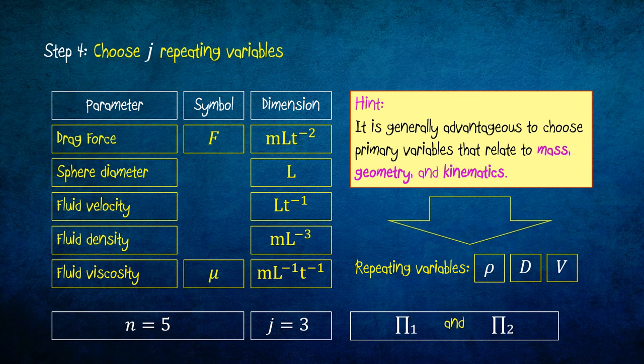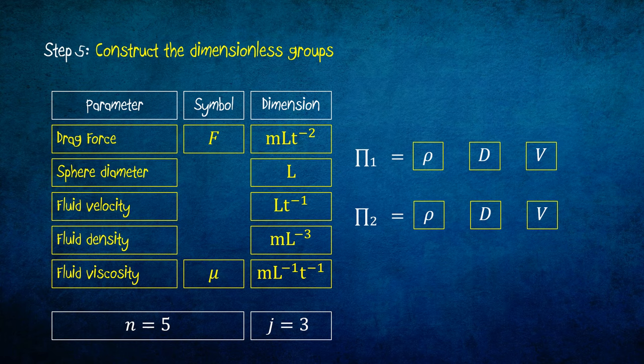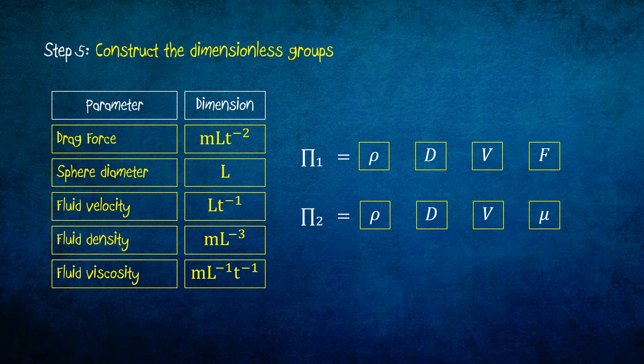Step 5 consists of constructing the dimensionless groups. Each of pi must contain the three repeating variables. And we add to each pi each of the remaining variables. Pi 1 and pi 2 are both dimensionless groups. For this, we put powers for each of the repeating variables. Let's put a1 and a2 as the power for rho, b1 and b2 as the power for d, and c1 and c2 as the power for v.